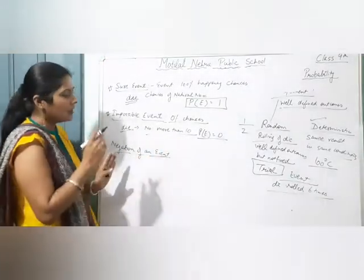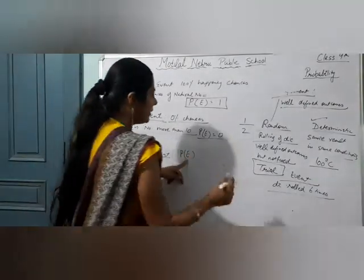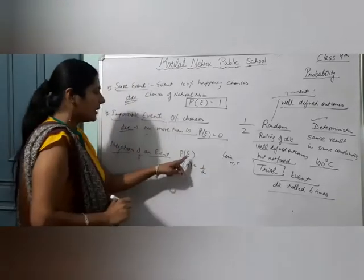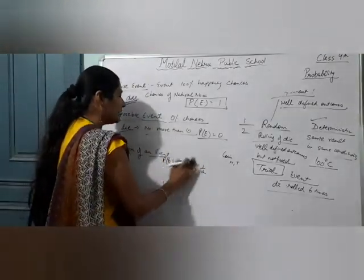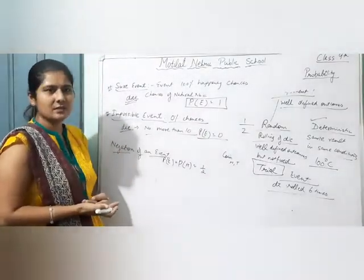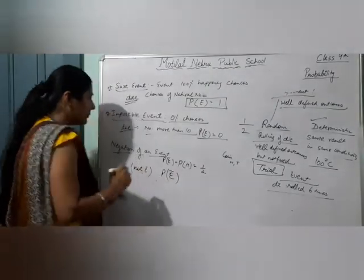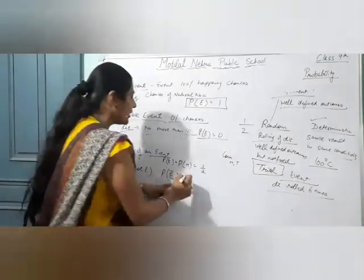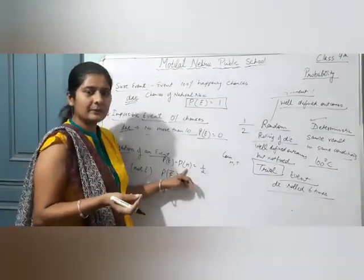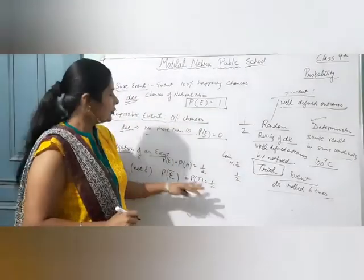अब आता है negation of an event. Negation का मतलब — किसी काम के होने के अगर यह event E है, for example head आने का, coin के case में head और tail आता है. तो probability of head कितनी है — 1 by 2. तो यह मेरा P(E) हो गया — मतलब event E जिसमें head आना चाहिए, head आने के chances मेरे 1 by 2. Negation का मतलब — head ना आने के chances कितने हैं? इसको हम लिखते हैं not E. यह होता है probability of not E — मतलब किसी event के ना होने के chances. Head ना आने का मतलब tail आएगा, तो tail आने के chances — वो भी 1 by 2, 1 by total number 2.